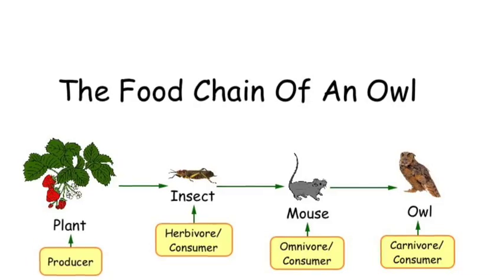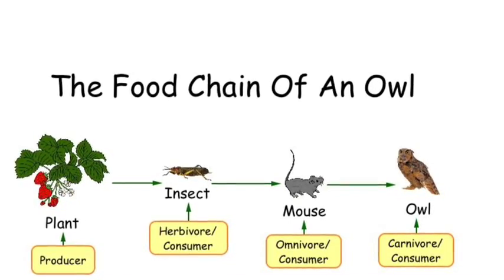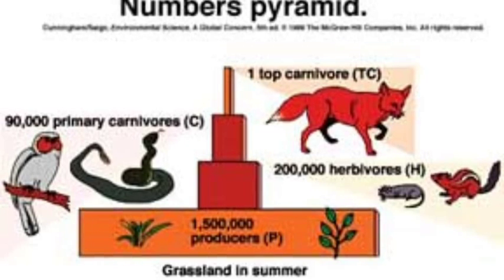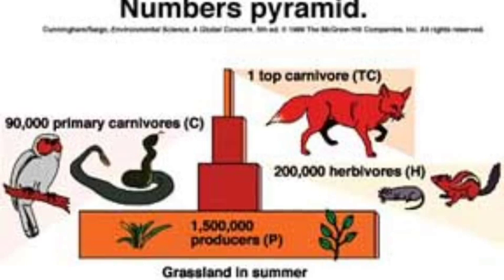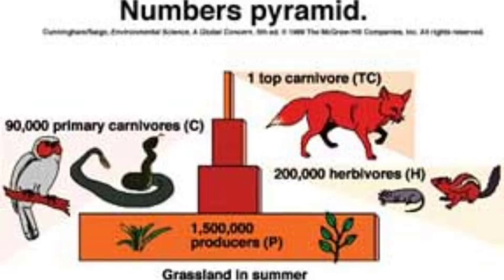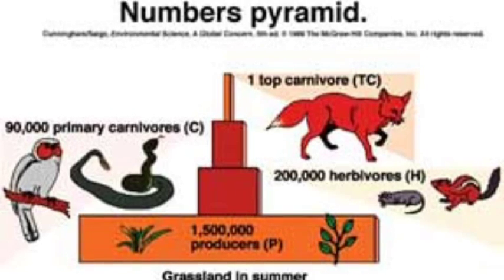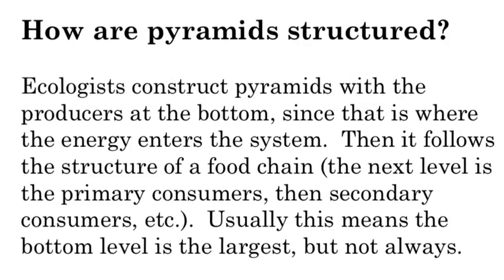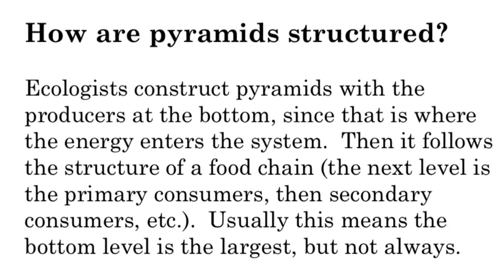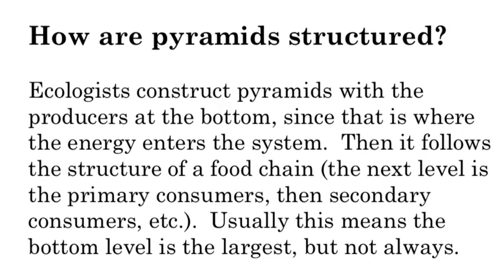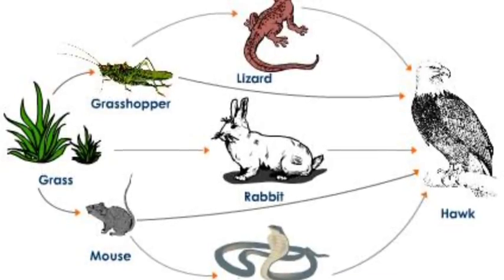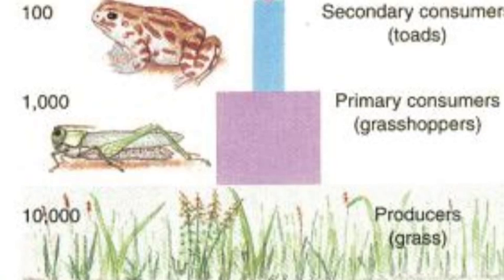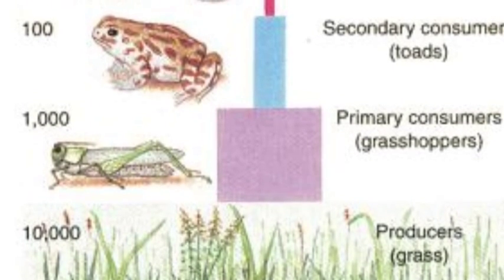Let's look more in depth at pyramid of numbers. We take a food chain and ask: how many plants are there, how many herbivores, how many carnivores? We move up the chain and organize that by number to make a nice easy-to-read pyramid, so we know exactly how many autotrophs, primary consumers, secondary consumers, and tertiary consumers there are. We structure them like a food chain — autotrophs at the bottom — and we go from autotrophs up to top consumer.